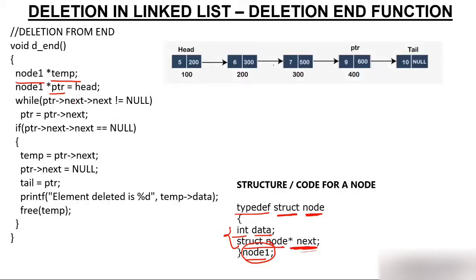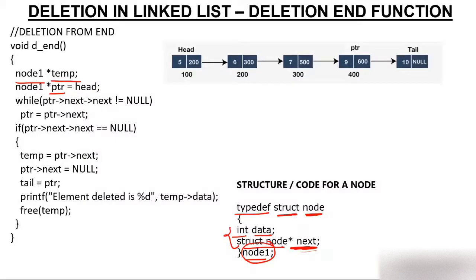We have a linked list and our job is to delete the last node. We have created pointer PTR of type node1, initialized with value head, which contains address 100 — so PTR will point to the first node. Now this loop is very important: it checks whether PTR->next->next is not null.